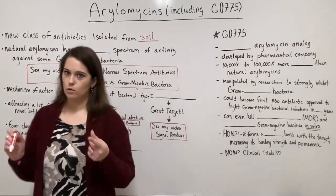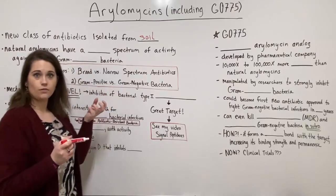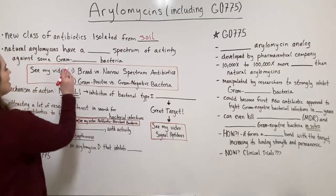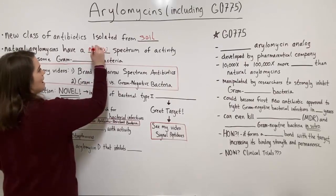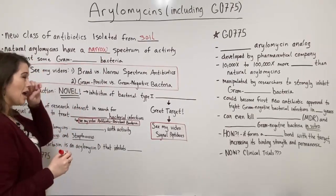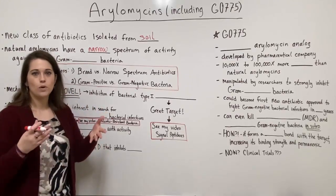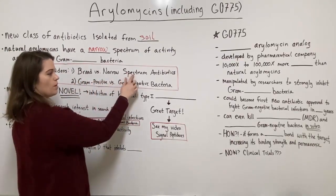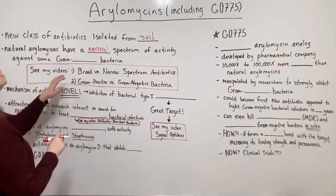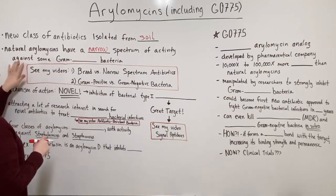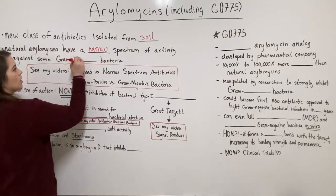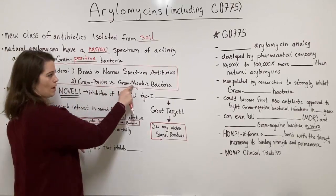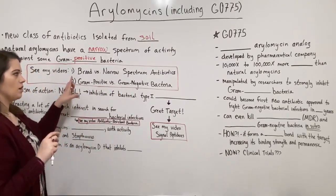Now natural arylomycins — those that were isolated from the soil sample and made naturally by soil bacteria — have a narrow spectrum of activity, which is kind of too bad. When we find a new antibiotic, we really want it to have a broad spectrum of activity. The natural arylomycins have this narrow spectrum where they're able to inhibit some gram positive bacteria. If you don't know the difference between gram positive and gram negative bacteria, please check out my video on that topic.